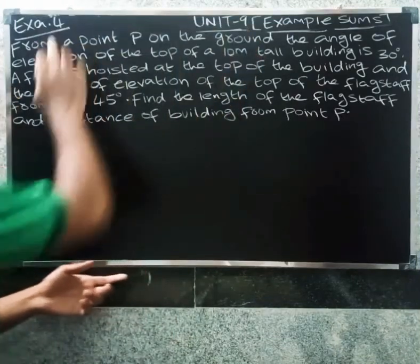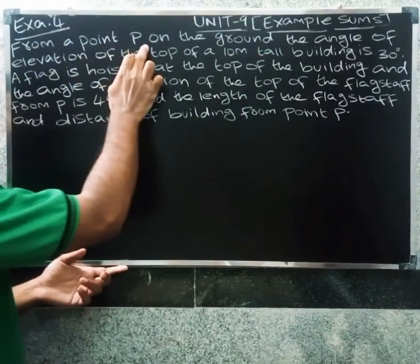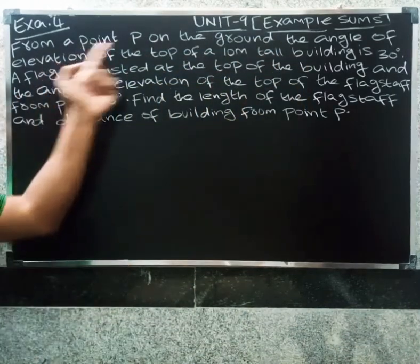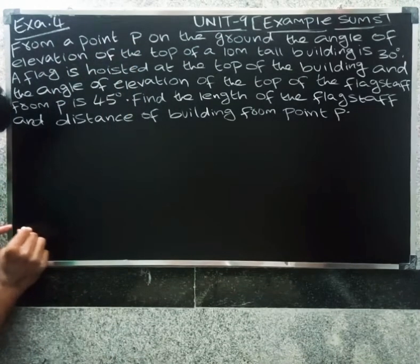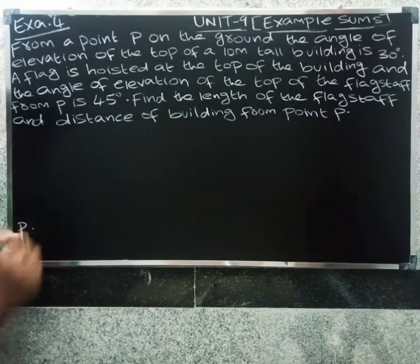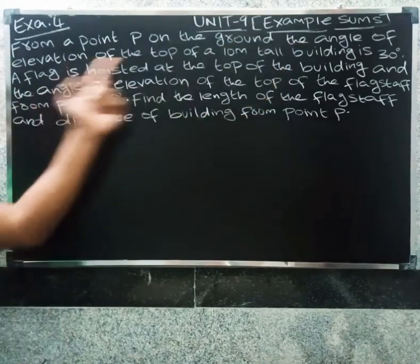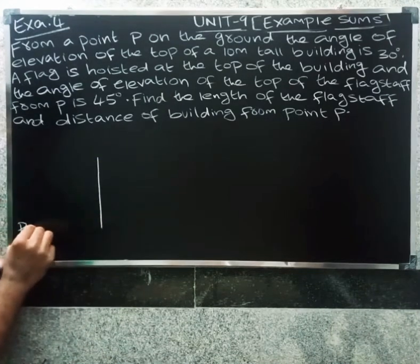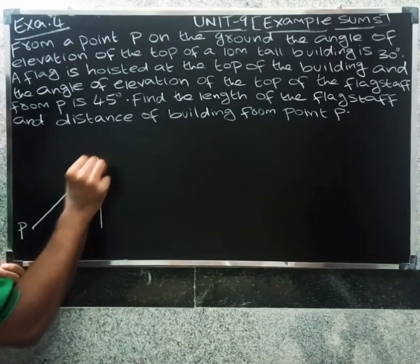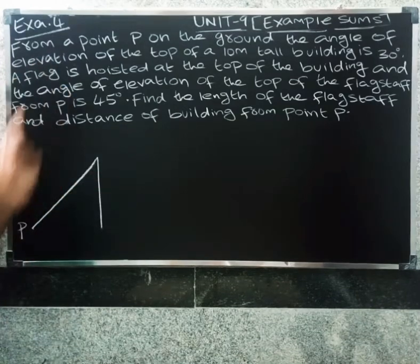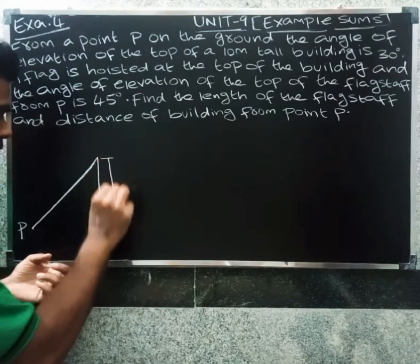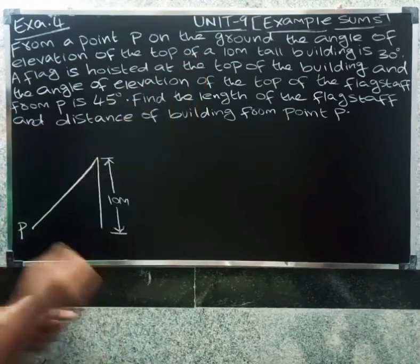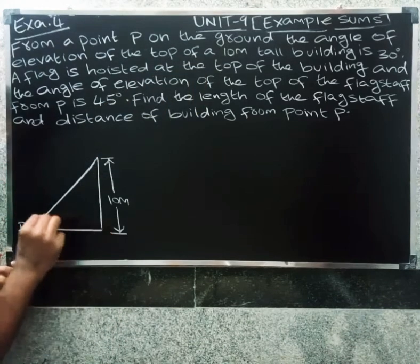Friends, in Unit 9 Example 4. From a point P on the ground, the angle of elevation of the top of a 10 meter tall building is 30 degrees. So this is a 10 meter tall building, and the angle of elevation is 30 degrees.